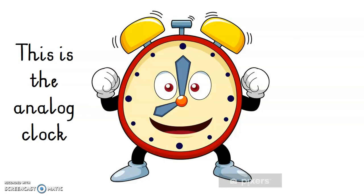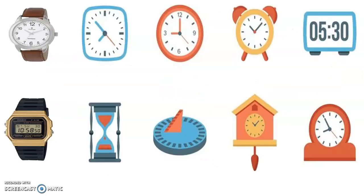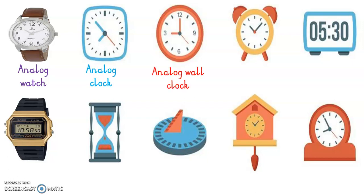This is the analog clock. We get many different types of clocks — let's have a look at a few. Mrs. Mitchell has a whole lot of clocks in front of you. The first one is an analog watch. Does mommy or daddy wear a watch? See which type of watch they have. This is an analog clock and an analog wall clock — these two clocks are the same, they hang on the wall.